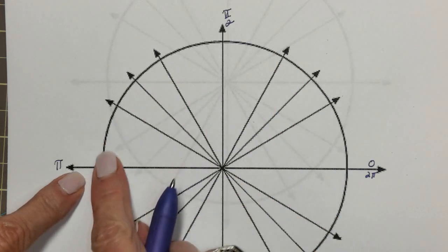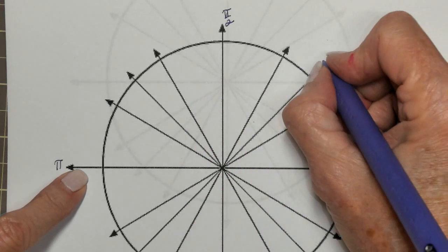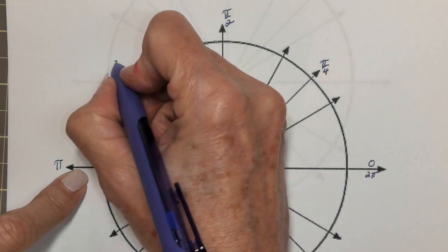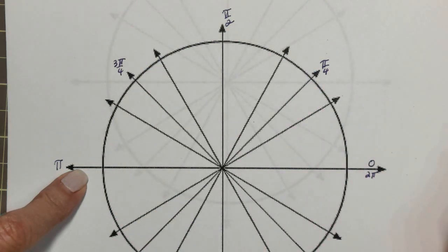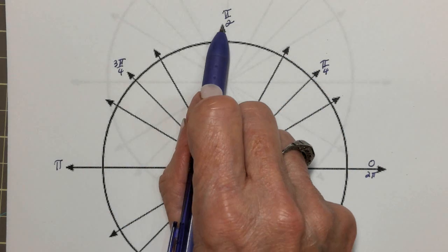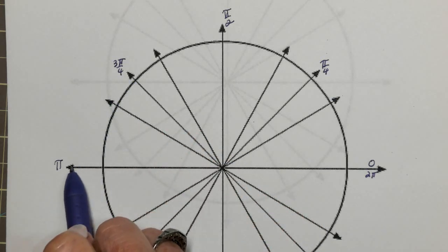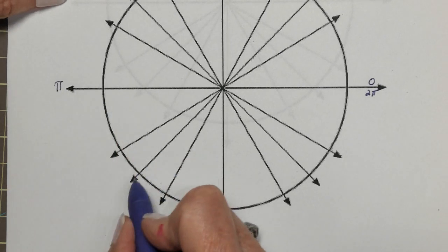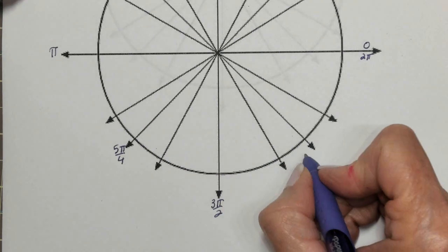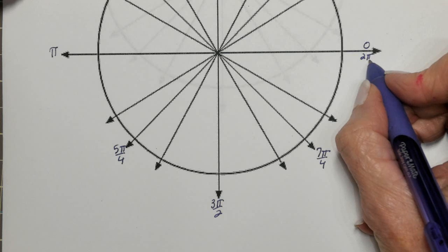Focusing on 0 to pi: a fourth of the way is pi over 4, and three fourths of the way is 3 pi over 4. Another way to think of it — counting in pi-over-4 increments: 0, pi over 4, 2 pi over 4 reduces to pi over 2, 3 pi over 4, 4 pi over 4 reduces to pi. Continuing around: 5 pi over 4, 6 pi over 4 reduces to 3 pi over 2, 7 pi over 4, and finally 8 pi over 4.